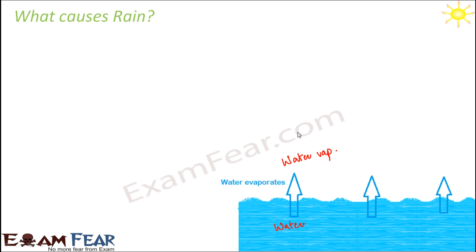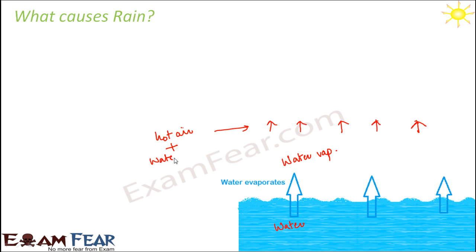As the air starts rising up, it gradually starts cooling down as well, because it is going away from the hot water body. As the air gradually cools down, this cooling causes condensation of the water vapor into liquid water droplets. Whatever was going up was a mixture of hot air plus water vapor, but when they have gone sufficiently up, the hot air cools down.